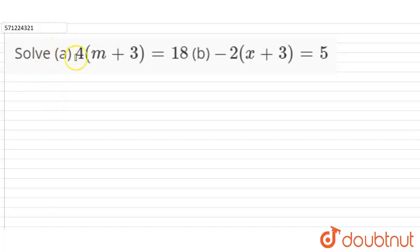Hi students, the question is solve A: 4(m + 3) = 18 and B: -2(x + 3) = 5. So in the first part, in the A part we have to solve 4 into m plus 3 is equal to 18.